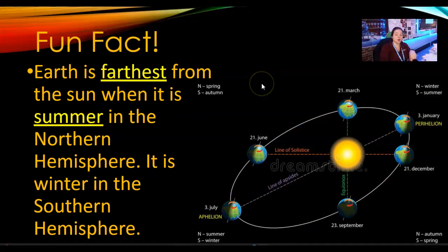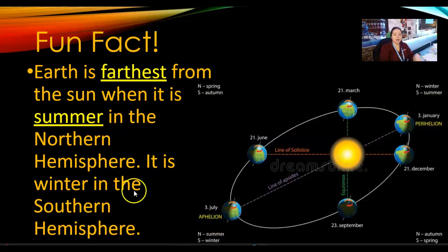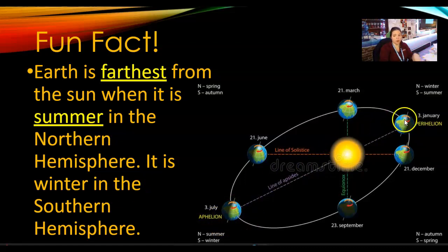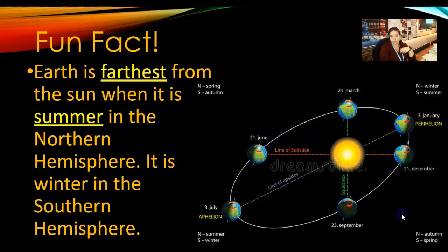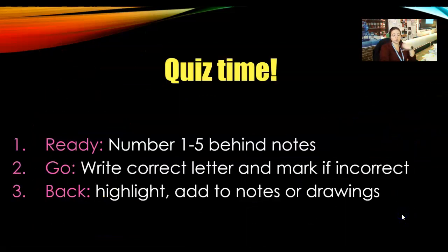The Earth is farthest from the sun when we are in summer — also called aphelion — and it is winter in the southern hemisphere. We are closest to the sun in January, in the winter — also called perihelion.